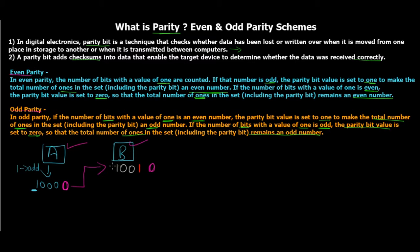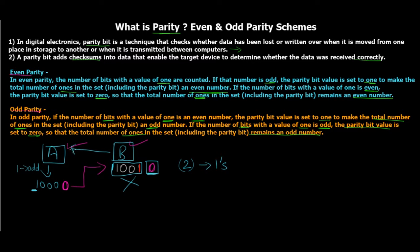B checks: it knows A used odd parity, so since the parity bit is zero, the data should have an odd number of ones. But because of the error, there are now two ones — an even count — in the received data. B recognizes the mismatch and knows the data is corrupted. It's important to note we are only performing error detection here, not error correction — we are detecting that some bits have been flipped.